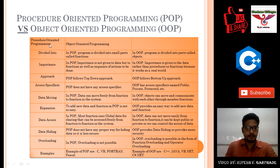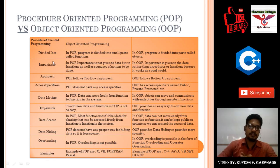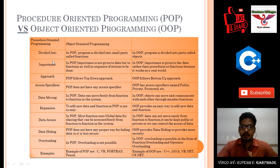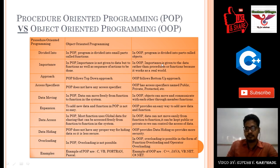In this comparison table, the first column is important points, the second column is for procedure oriented programming, and the third column is for object oriented programming. The first difference: in procedure oriented programming, the program is divided into small parts called functions. In object oriented programming, the program is divided into parts called objects.